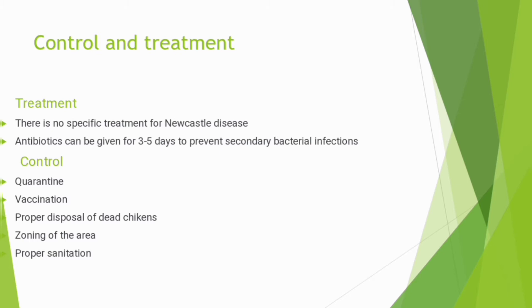Zoning of the area is also key — this should be considered to avoid wild birds, as they usually transmit this disease. Zoning will prevent wild birds from entering your flock and causing Newcastle infection. Proper sanitation is important. Workers in your flock should have personal protective equipment, and before entering the flock they should sanitize their feet to make sure they carry no germs. That is all about Newcastle disease.